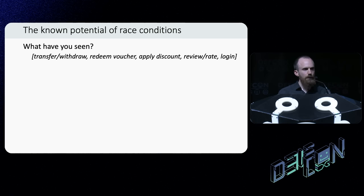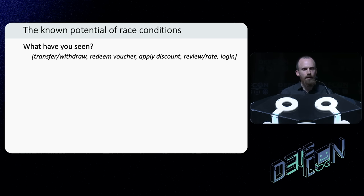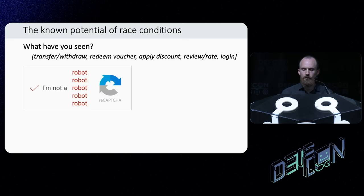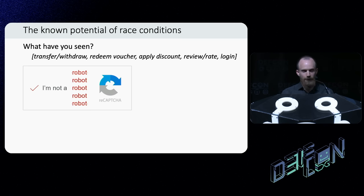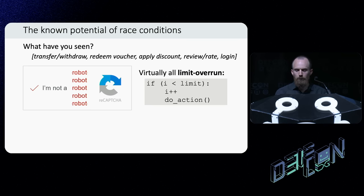Let's start by surveying what we do understand. What race conditions have you seen or exploited in the wild? Maybe things like reusing a single-use voucher multiple times, or bypassing some kind of rate limit, or reviewing a single product multiple times. One of my favorites that I found is I noticed that you can reuse a valid single reCAPTCHA solution multiple times within a short time window. When I reported that to Google, they were like, oh yeah, that's not good — but unfortunately our system is so distributed that we can't patch this. So that technique still works on a bunch of websites today. But all of these examples could be classed as limit overruns — they're all about doing something more times than you're supposed to.